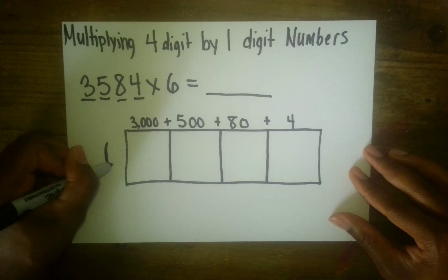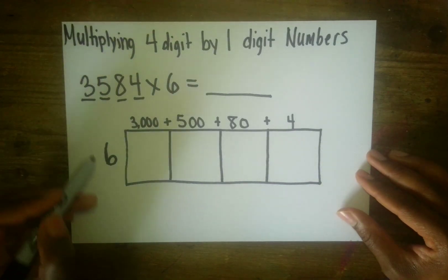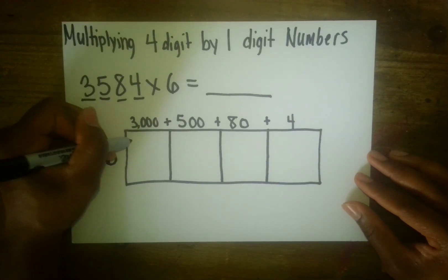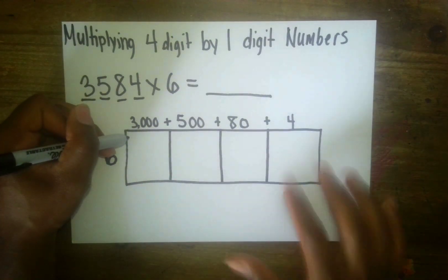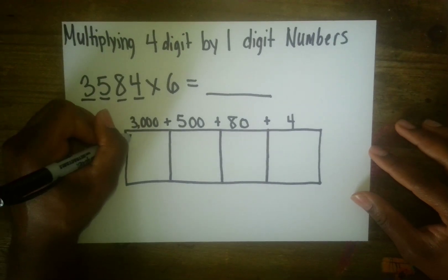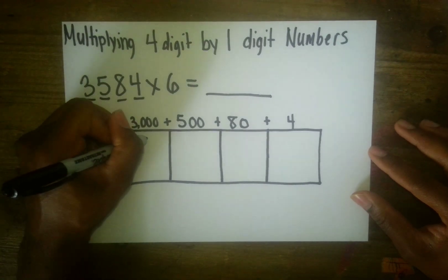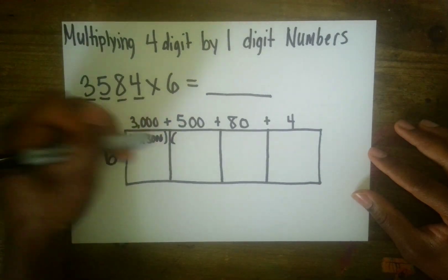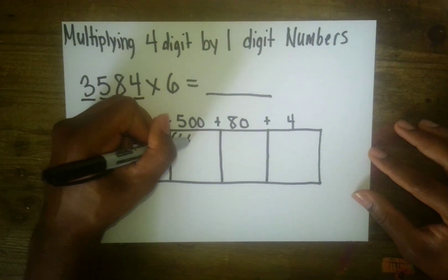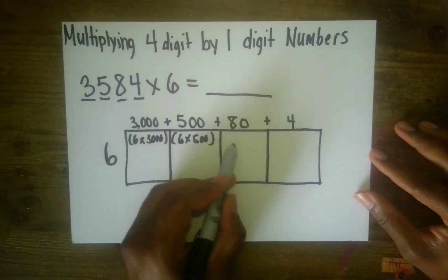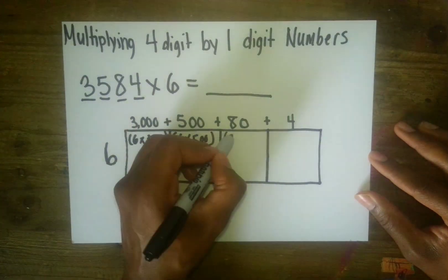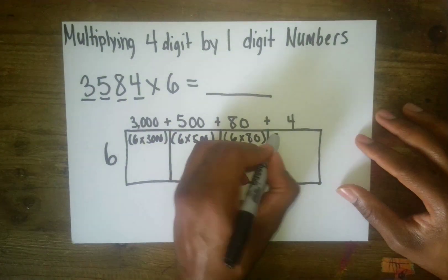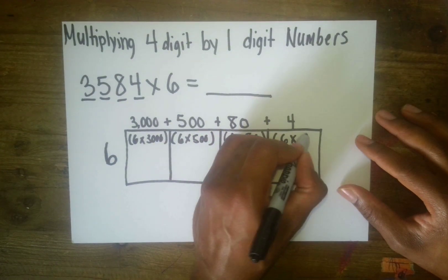I have a one over here, but it should be a six. Now we're going to solve each of these equations, and after we solve them, we're going to add them up to get our total answer. In the first box I'm going to put six times 3,000; in the next box, six times 500; in the next box, six times 80; and in the last box, six times 4.